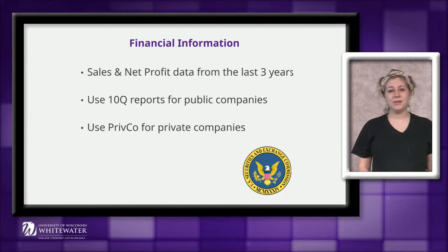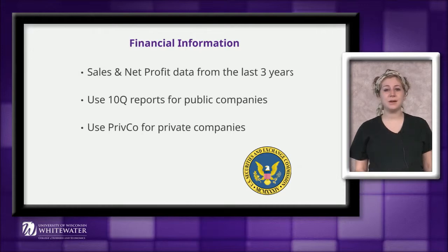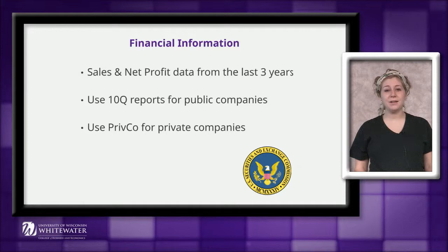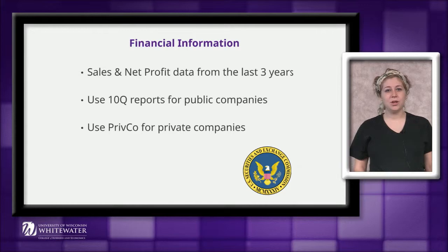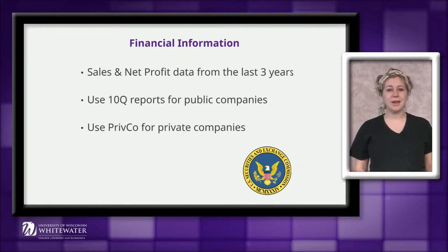For your third slide, you will need to find financial data for your retailer. This will be easy to find if you have been assigned a public company, because they are required to release their financial statements to the SEC. However, private companies are not required to do so, and finding this information may involve a bit more digging. For public companies, go to the retailer's website and look for a link at the bottom of the page that says investor relations or investor information. Here you will find a variety of financial reports. You will want to locate the 10Q reports for the most recent three years, which will include information on their net sales and net profit margin.